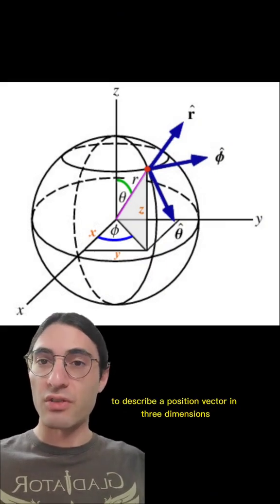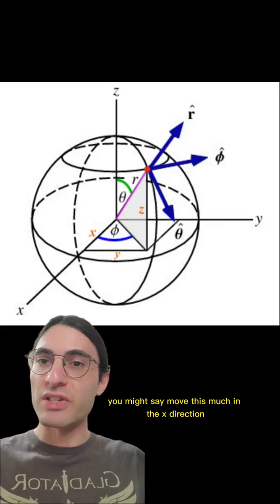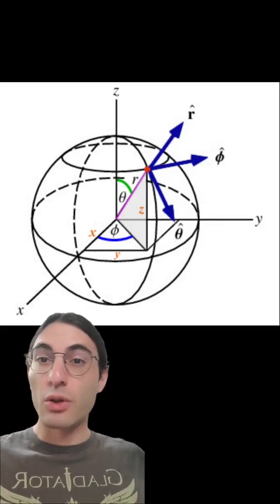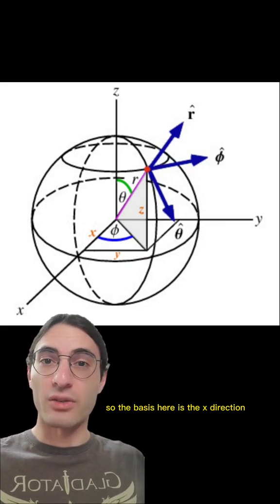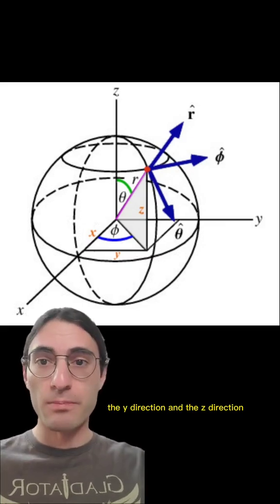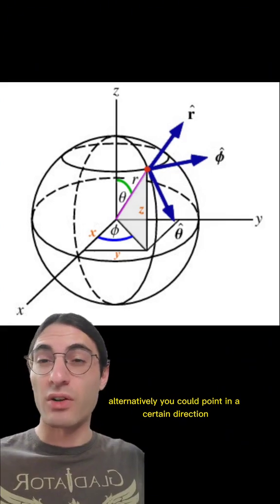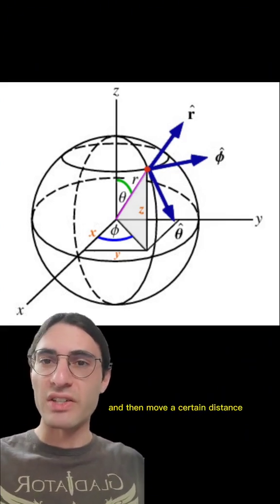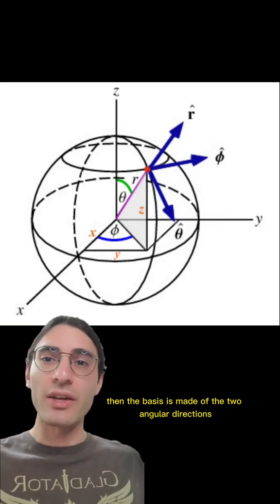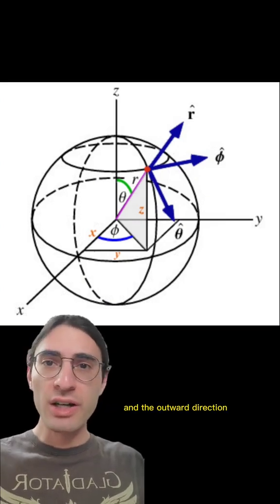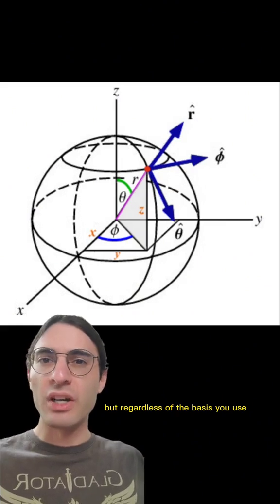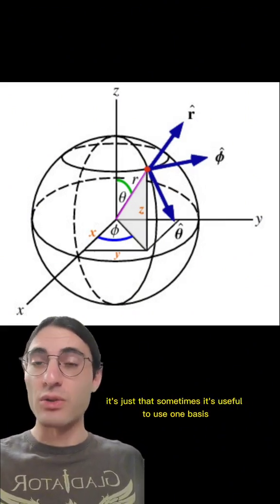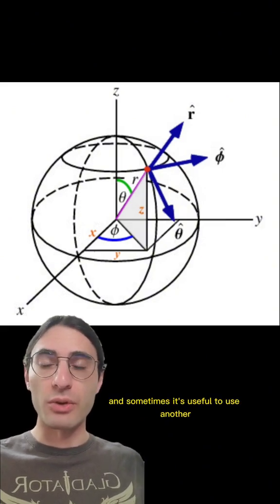For example, to describe a position vector in three dimensions, you might say move this much in the x direction, this much in the y direction, and this much in the z direction — so the basis here is x, y, and z. Alternatively, you could point in a certain direction specified by two angles and then move a certain distance; then the basis is made of the two angular directions and the outward direction. But regardless of the basis you use, you're describing the same vector. It's just that sometimes it's useful to use one basis, and sometimes it's useful to use another.